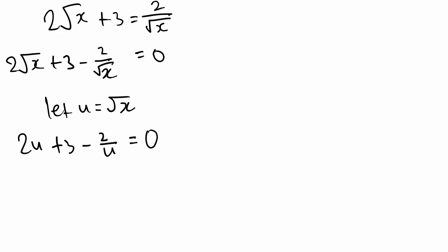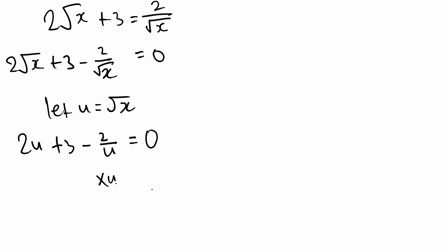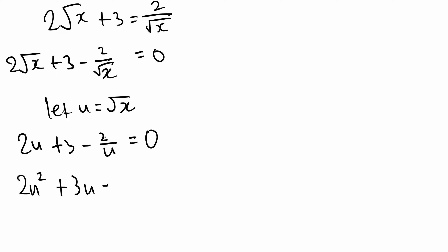Now let u equal root x, because root x is our variable and it appears twice. That gives us 2u plus 3 minus 2 over u, all equaling 0. But we don't have a quadratic yet — the first term isn't u squared. We also have a fraction we want to get rid of. The easy way to eliminate fractions is to multiply by u. But remember: if you multiply one side by u, you have to multiply everything on both sides by u. So 2u times u is 2u squared, plus 3 times u is 3u, and minus 2 over u times u is just minus 2. The right side, 0 times u, stays 0. Now we can see our quadratic equation.